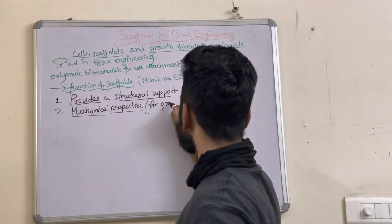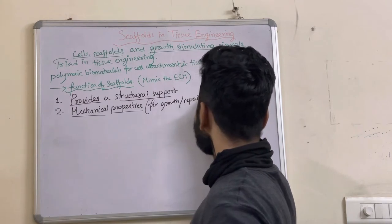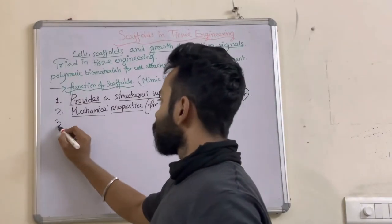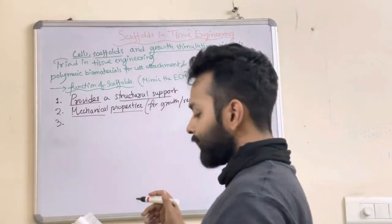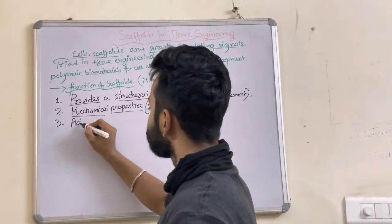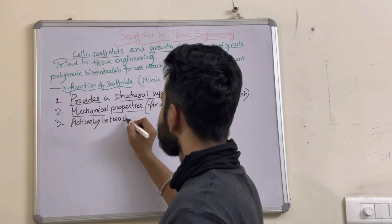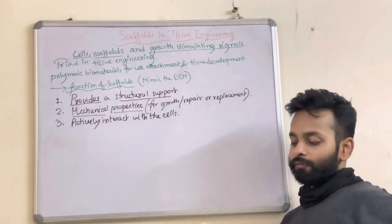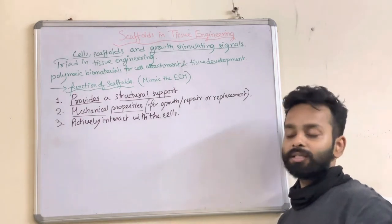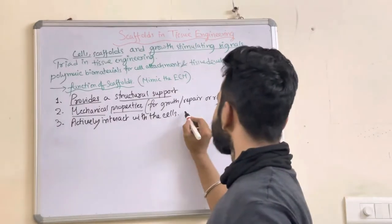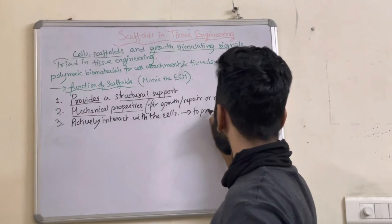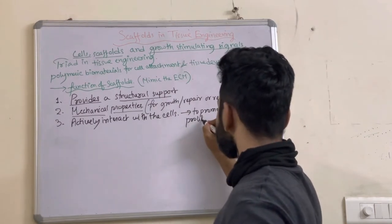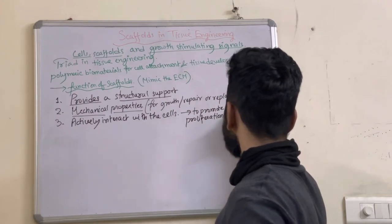The third function would be to actively interact with cells and to facilitate activities such as proliferation and differentiation, which are very important characteristics of tissues. So scaffolds should actively promote cellular proliferation and differentiation.